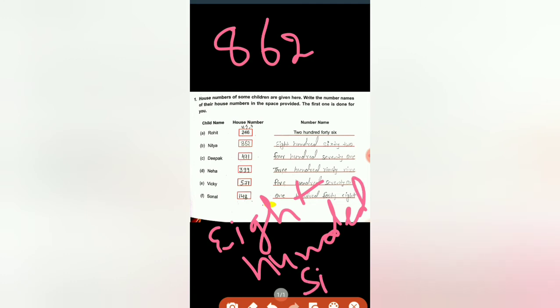800... 862, is it clear? 862, we will write here 862. Again, the next number is 471, so we will write the house number that is 471.